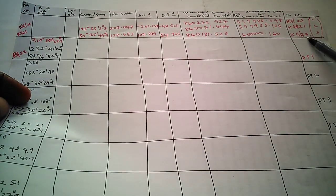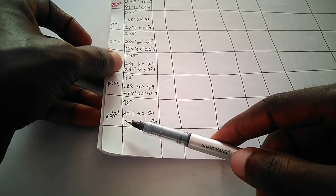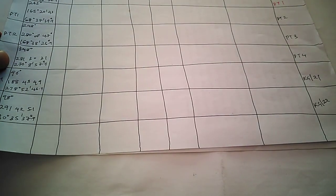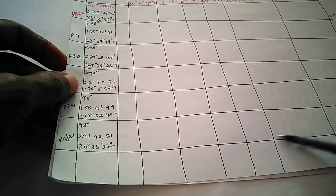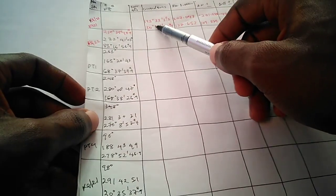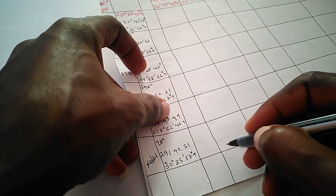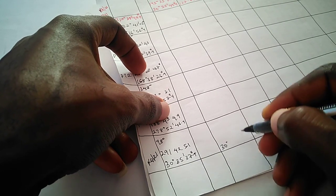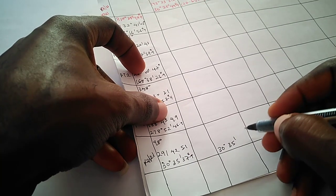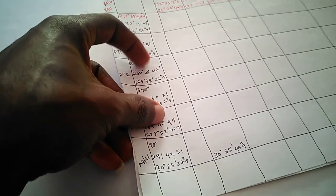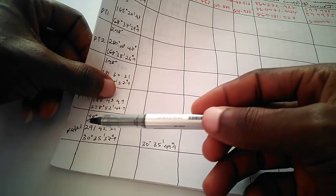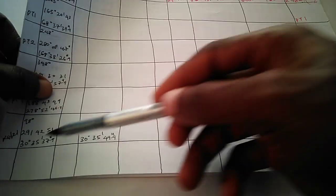Since our traversed line is also from KG21 to KG22, we compare it directly to the control. The corrected bearing we are supposed to have for this line is 30 degrees 35 minutes 49.9 seconds — this is the bearing we should get from KG21 to KG22.